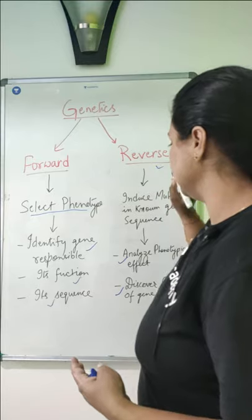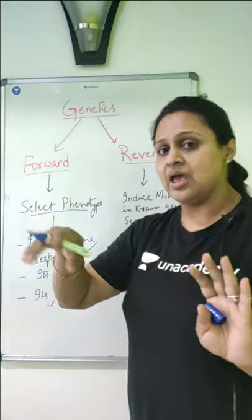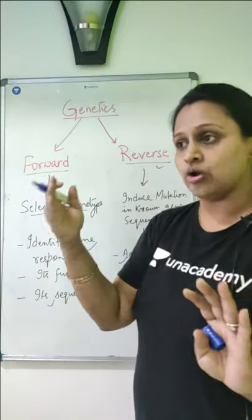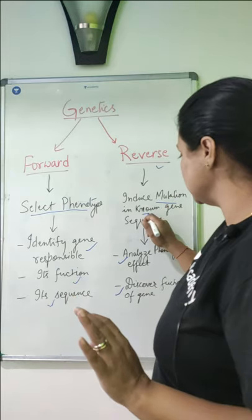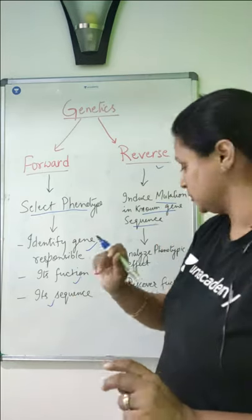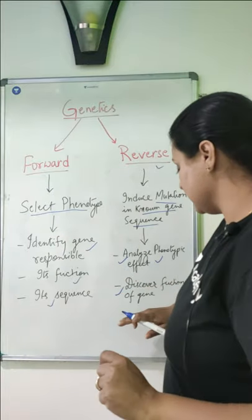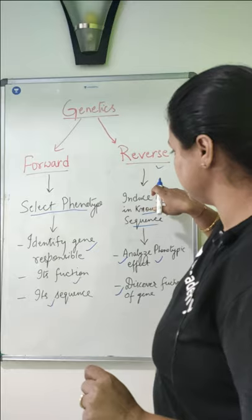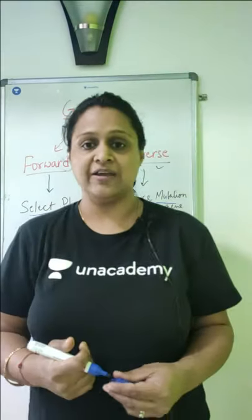What is the reverse genetic approach? You take the gene first. You know the gene sequence beforehand. You induce mutation in it, and then see what phenotypic changes occur. First, we induce mutation in the known gene sequence, then analyze the phenotypic effect, and discover the function of the gene.